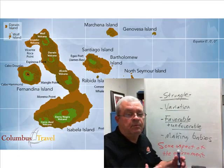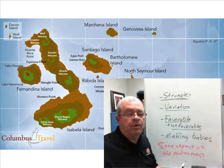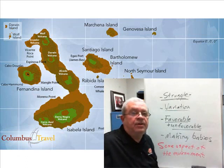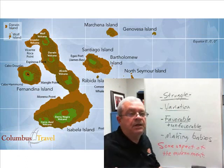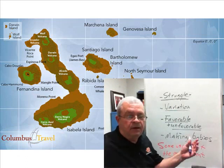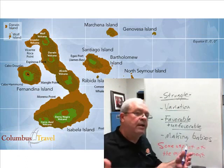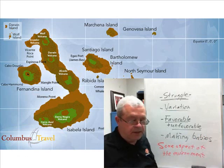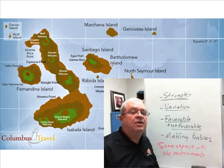By the time Darwin arrived, many of the islands had finch populations. Darwin collected some and found out later that there are different species on different islands.